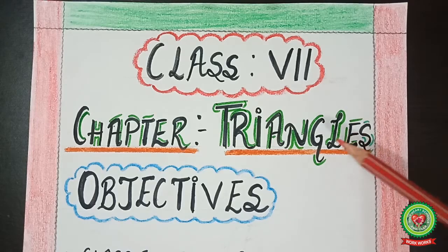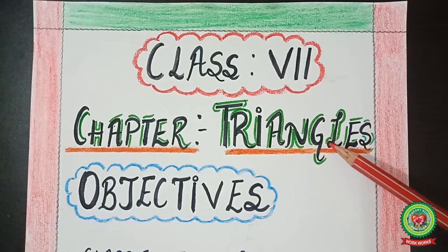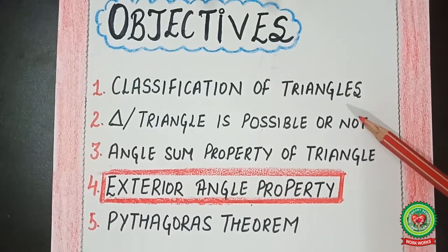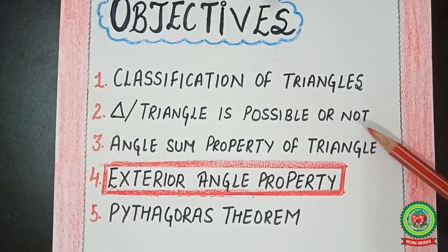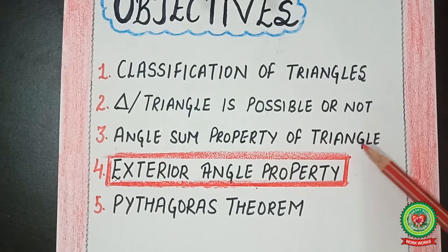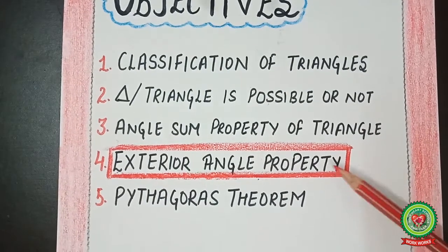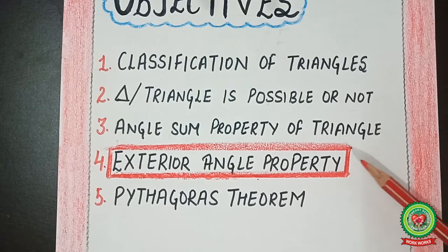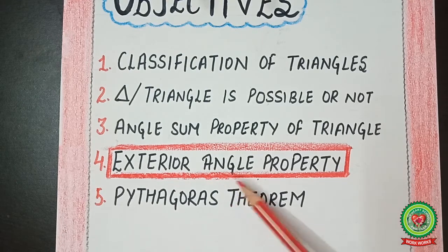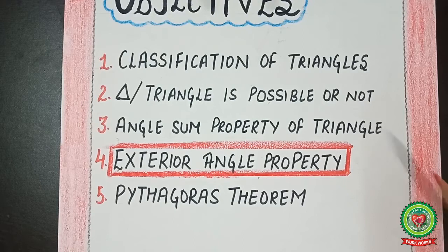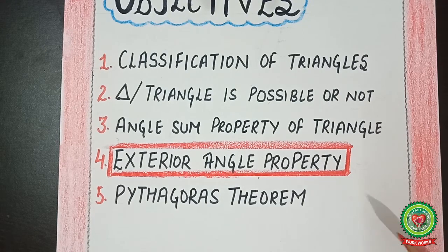Dear students, in this chapter on triangles we have already learned about classification of triangles, whether a triangle is possible or not, and the angle sum property of triangle. In the previous discussion we also covered Type 1 related to the exterior angle property. Today we will start the sums related to Type 2 about the exterior angle property.